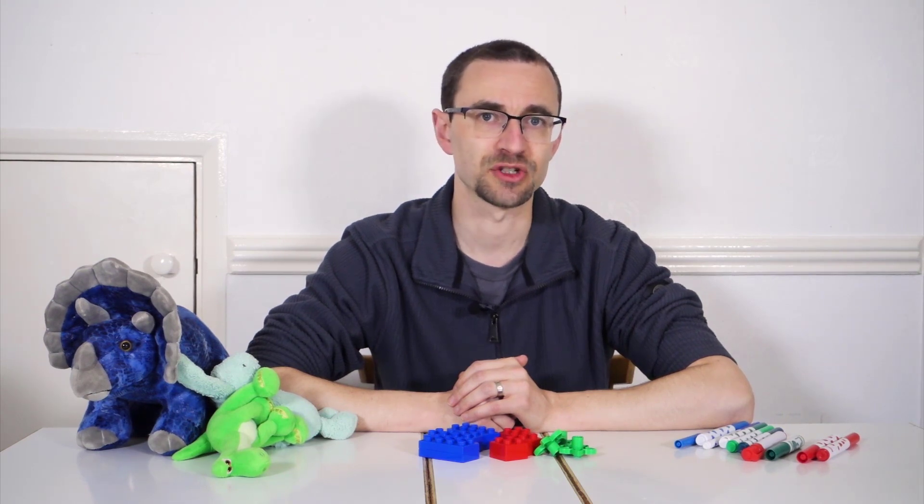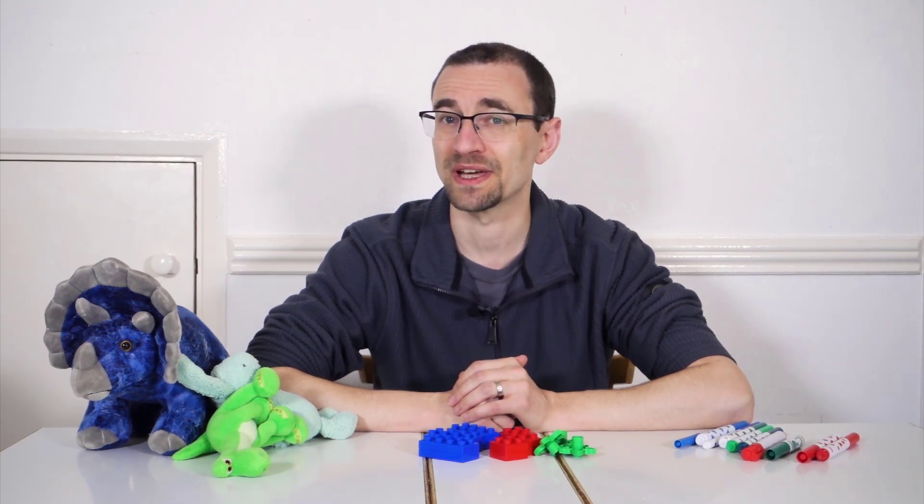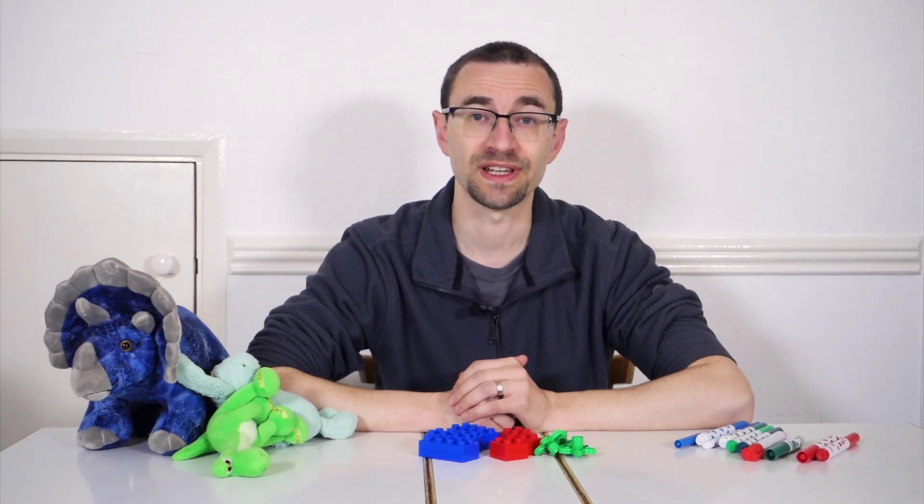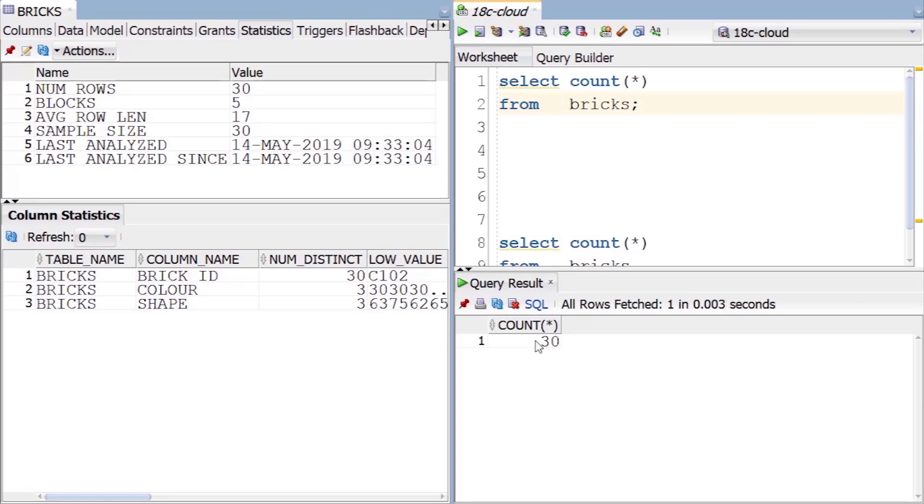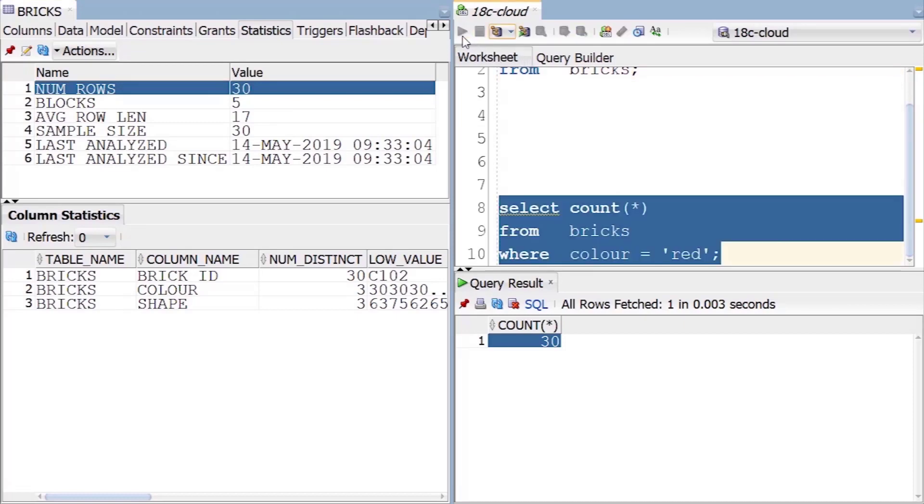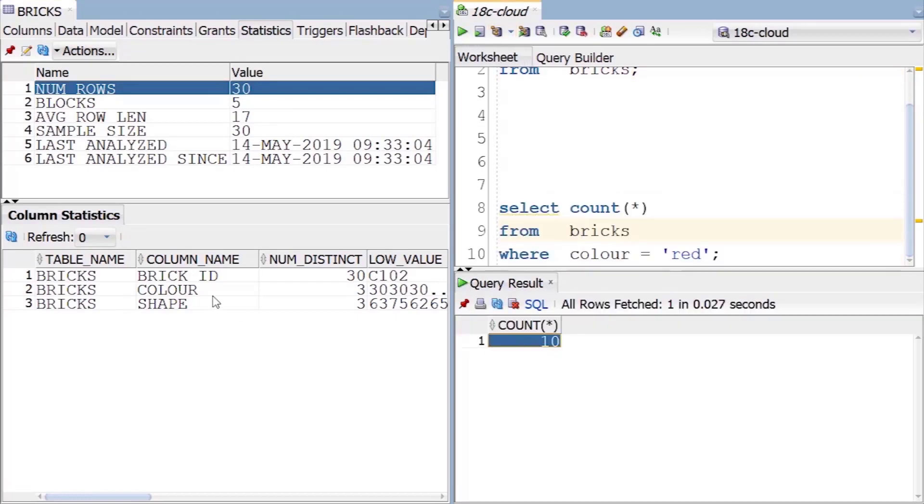Using this information, the optimizer can then estimate how many rows you're going to get from each table. If you're selecting all the rows from a table, you can use the row count stat to give a good estimate. But as soon as you add a WHERE clause, you'll only get some fraction of the rows back.